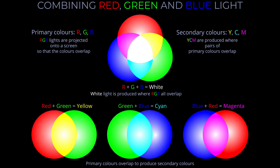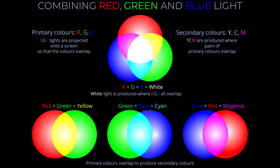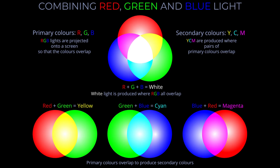White light can be obtained by combining three colors — red, blue, and green — which are called primary colors.